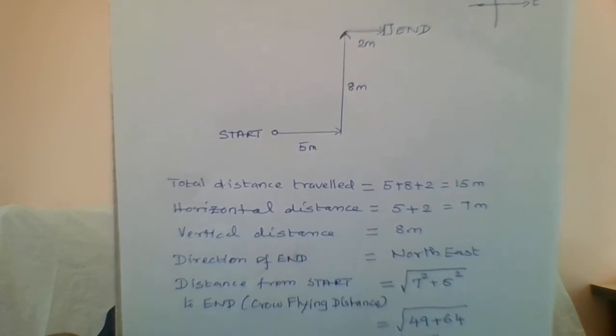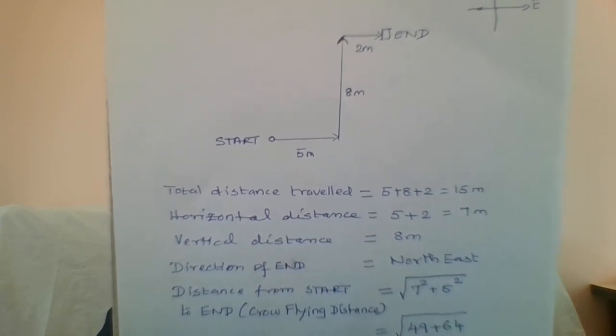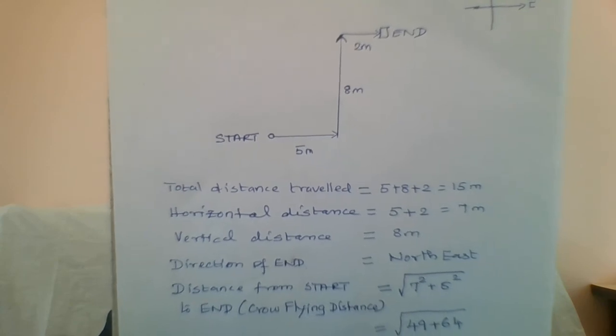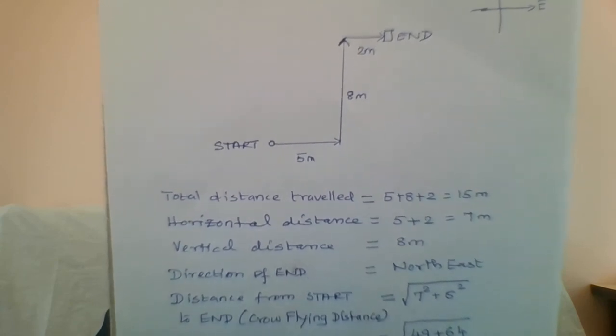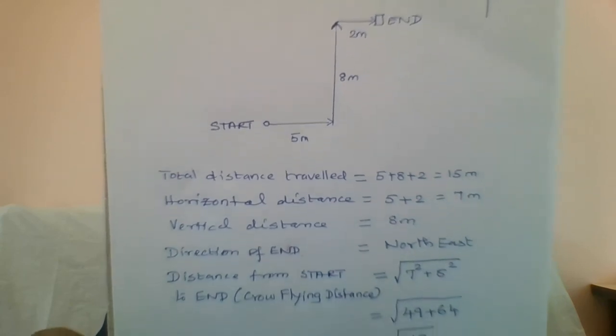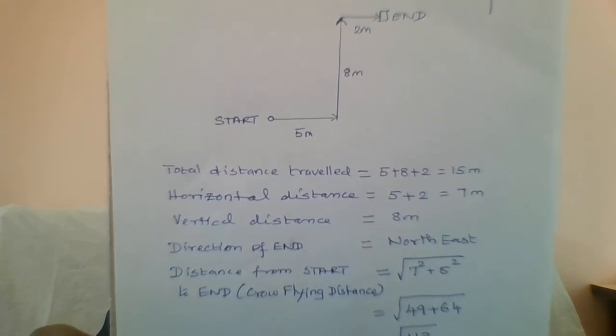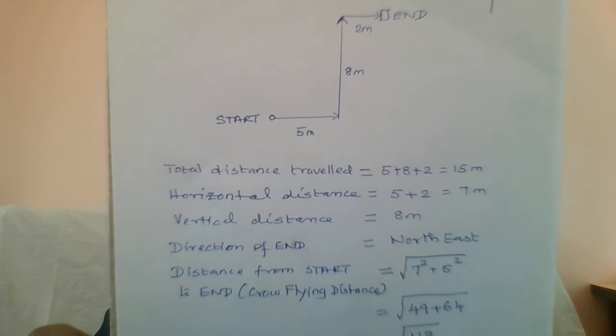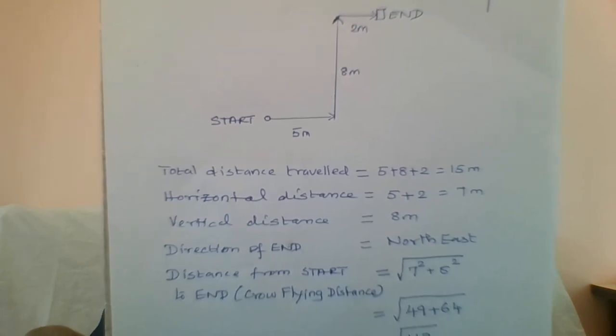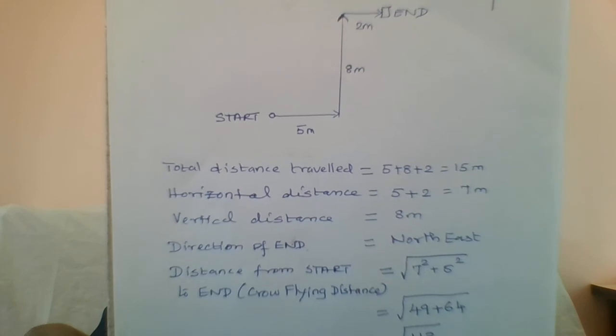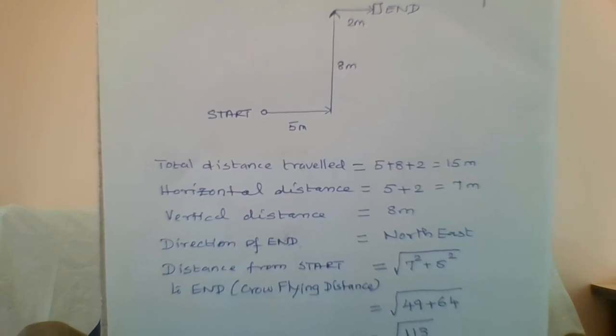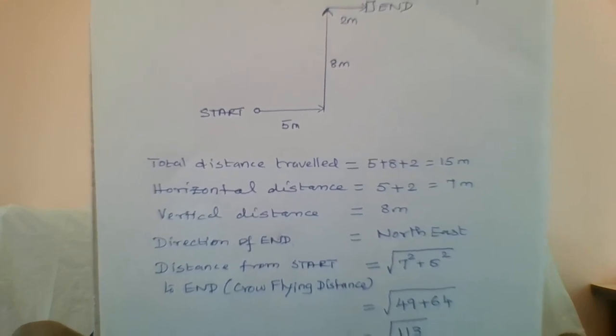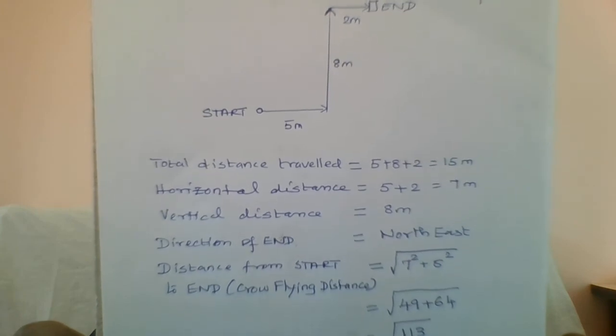Now the questions asked could be: one is what is the total distance traveled by Ramesh? That is equal to 5 + 8 + 2, that is 15 meters. The next question will be what is the horizontal distance traveled by Ramesh? It will be 5 + 2, that is 7 meters. What is the vertical distance traveled by Ramesh? That is 8 meters.